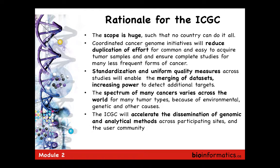The ICGC scope is enormous — 25,000 genomes plus their matched normals. No one country can do that alone, so it's an international effort. We now have 89 projects — more than the original 50, and not all of them are 500 samples. Some are 100 or 200, because for rare tumor types it's really hard to get even 100. Working together made standardization and quality measures possible across all the various tumor types.